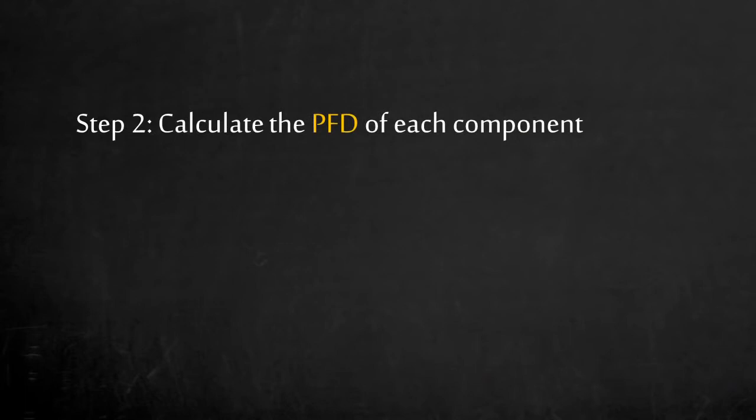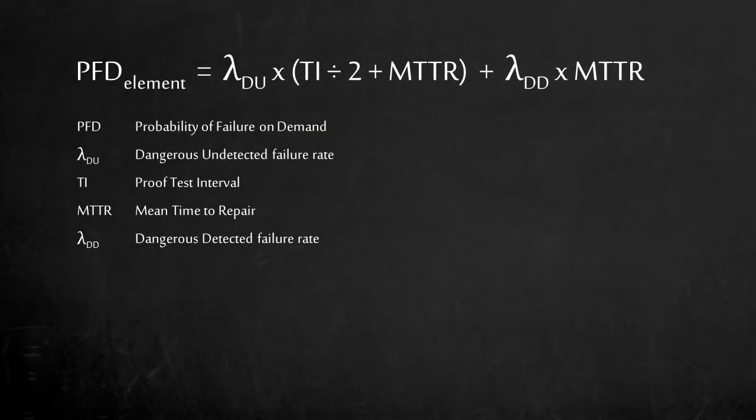Step 2. To determine the reliability of our safety instrumented function, we need to calculate the PFD of each component. With a simple equation, the probability of failure on demand of each element can be determined. This equation only applies to components under low-demand operation with a 1 out of 1 voting logic, which means there is no redundancy. There are other equations for different voting logic, such as 1 out of 2 or 2 out of 3. There are also different equations for safety functions used continuously, which is considered to be high-demand operation.